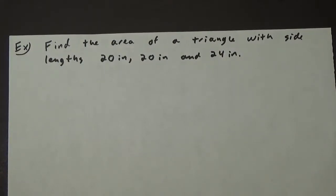Let's look at this example problem: find the area of a triangle with side lengths 20 inches, 20 inches, and 24 inches. When you get a problem like this, a good first step is to